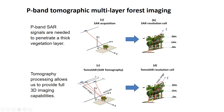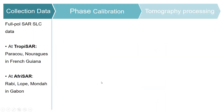How does it work? First, we need to use SAR data. In the development of the Biomass mission, there are two campaigns in tropical forests to support algorithm development. Airborne data has been collected over the TROPISAR campaign in South America and the AFRISAR campaign in Africa.